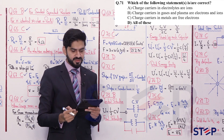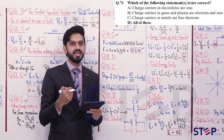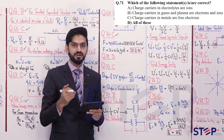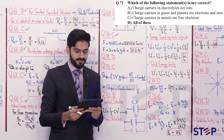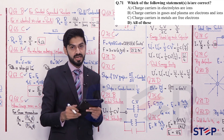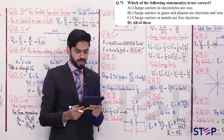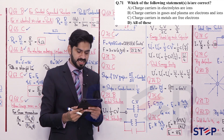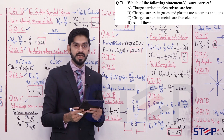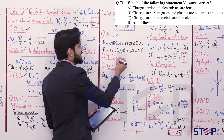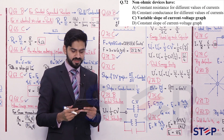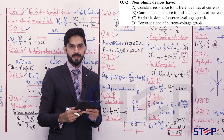Question 71: Which of the following statements is correct? (A) Charge carriers in electrolytes are ions — correct. (B) Charge carriers in gases and plasma are electrons and ions — correct. (C) Charge carriers in metals are free electrons — correct. Therefore option D — all of these — is the answer. Question 71's answer is D.